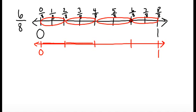1, 2, 3, 4 parts. So now let me label this 0 fourths, 1 fourth, 2 fourths, 3 fourths, 4 fourths.